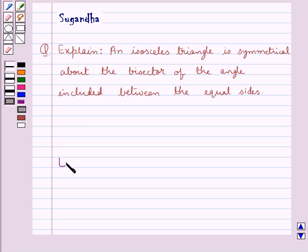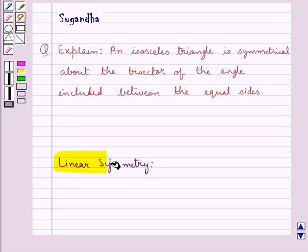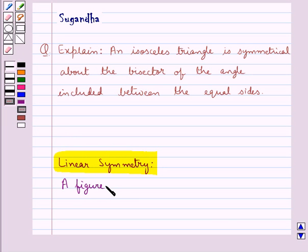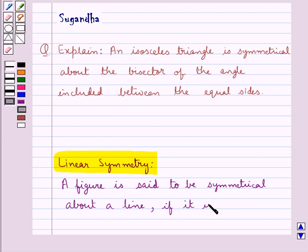First we recall the definition for linear symmetry. A figure is said to be symmetrical about a line if it is identical on either side of the line.